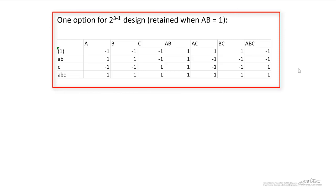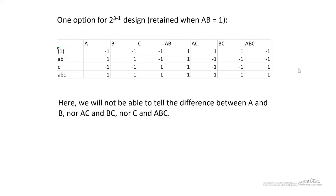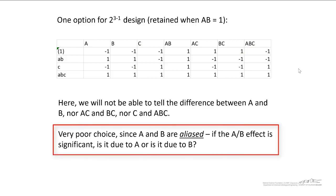One option for this 2 to the 3 minus 1 design is if we sort by column AB, and we only retain those rows that have AB equal to 1. If we did this, you notice that if we computed the contrast, the contrasts are computed by taking the dot product of these columns with the actual treatment responses, we would not be able to tell the difference between A and BC. You notice that they're exactly the same. Nor AC and BC, those are exactly the same. And C and ABC, those are exactly the same. So we have a problem here. This is a very poor choice since A and B, as an example, are aliased. That's a term that we're going to use quite a bit when we talk about fractional factorial designs. If the AB effect, remember they're combined because the computation of them is exactly the same. So if that AB effect is significant, we don't know if it's due to effect A or if it's due to effect B.